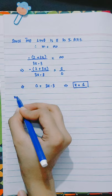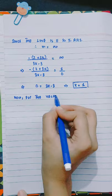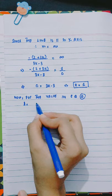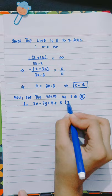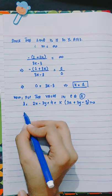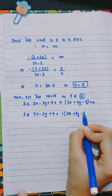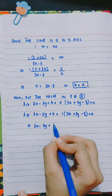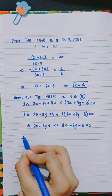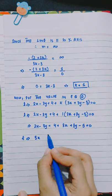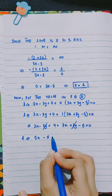So the value of k is 1. Now put the value in equation A: L equals to 2x minus 3y plus 4 plus 1 into 3x plus 3y minus 5 equals to 0. Expanding: 2x plus 3x gives 5x, minus 3y plus 3y cancels, plus 4 minus 5 gives minus 1. So L equals 5x minus 1 equals 0.